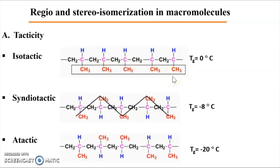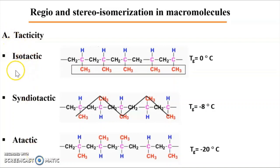According to the positions of the substituent Z, we can identify three isomers. Monosubstituted monomers lead to isomerization, and thus we can talk about what we name tacticity. Here we define three isomers: we have the isotactic, syndiotactic, and atactic.